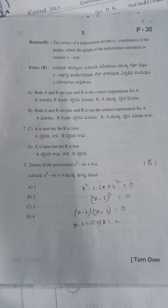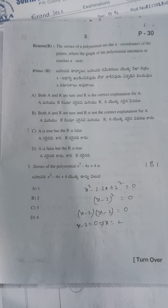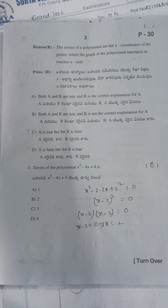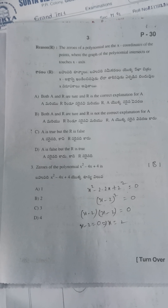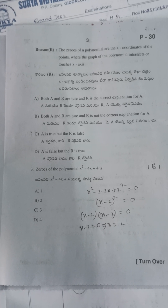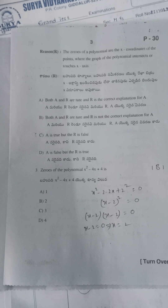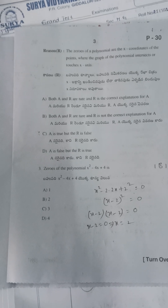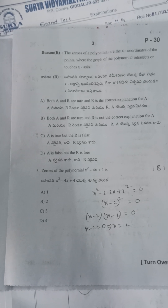Third question: zeros of the polynomial x² − 4x + 4. We can write it as (x − 2)², which is in the form of (x − 2) whole square. So the zero is x = 2. The answer is option B.